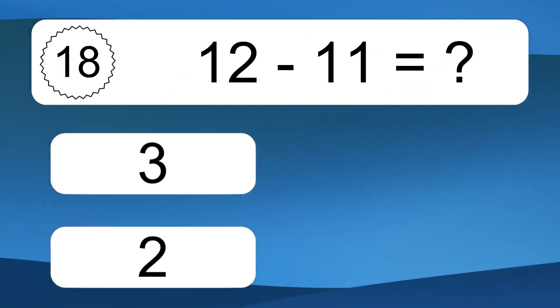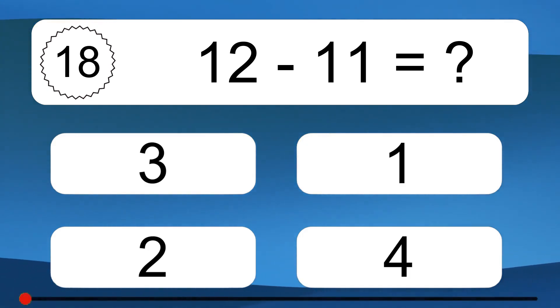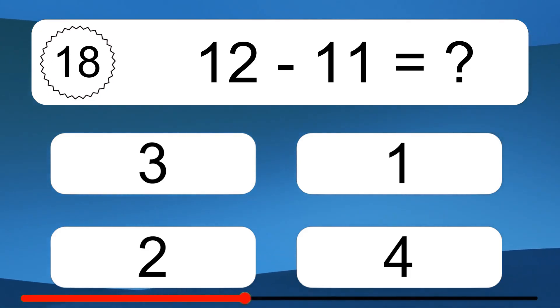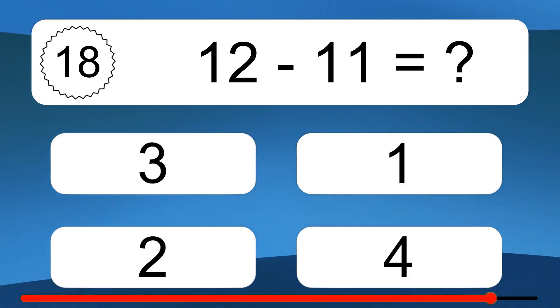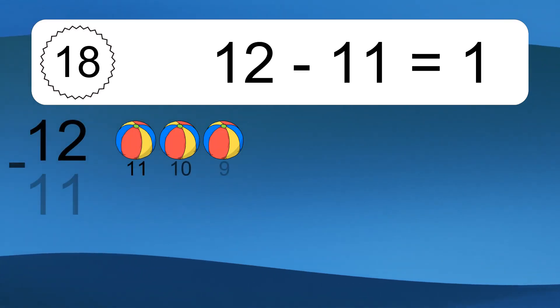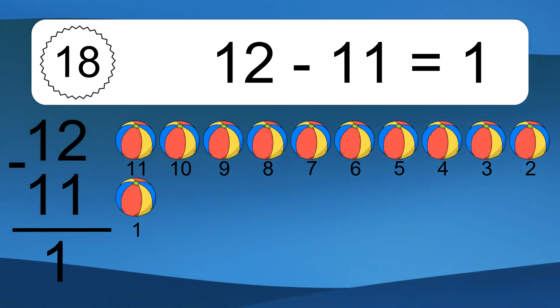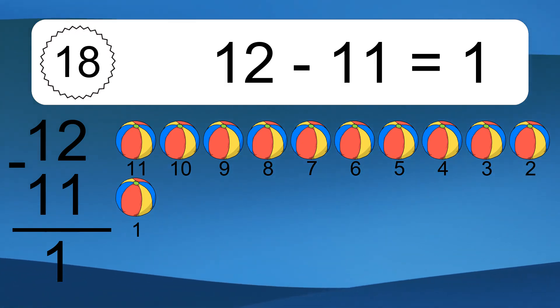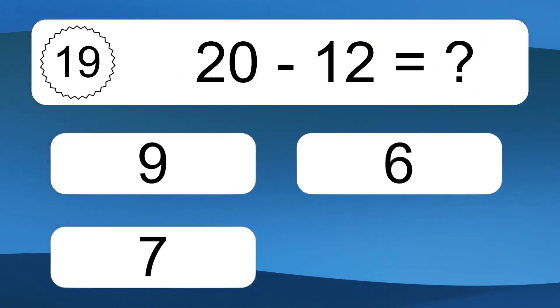12 minus 11 equals what? 12 minus 11 equals 1. Let's count it. 11, 10, 9, 8, 7, 6, 5, 4, 3, 2, 1. 20 minus 12 equals what?